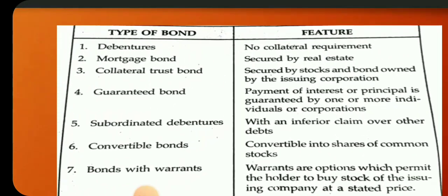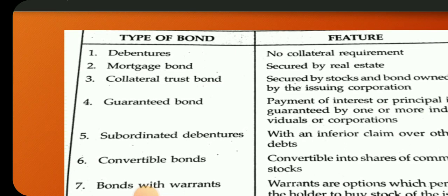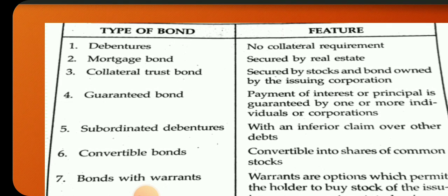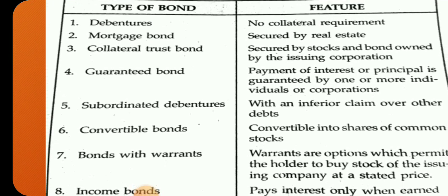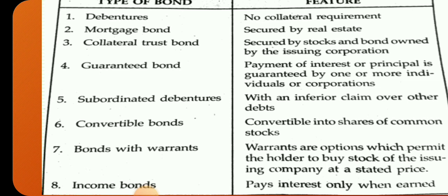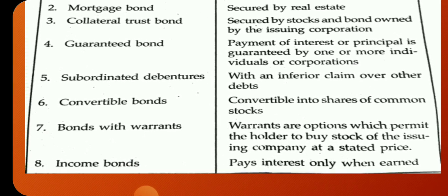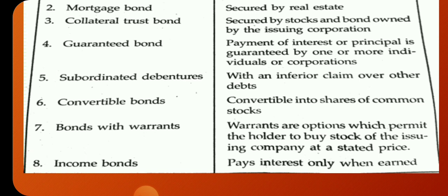Types or classifications of bonds include: debentures — no collateral requirements; mortgage bonds — secured by real estate; collateral trust bonds — secured with stocks and bonds owned by the issuing corporation; guaranteed bonds — advance payment of interest or principal is guaranteed by one or more individuals or corporations; subordinated debentures — with an inferior claim over other debts; convertible bonds — convertible into shares of common stock; bonds with warrants — warrants are options permitting the holder to buy stock of the issuing company at a stated price; and income bonds — pays interest only when earned.